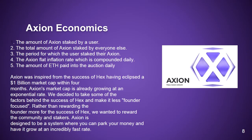Axion Economics: Axion generates interest through the idea of inflation. The Axion smart contract pays out based on 5 basic principles: 1) the amount of Axion staked by a user; 2) the total amount of Axion staked by everyone else; 3) the period for which the user staked their Axion; 4) the Axion flat inflation rate, which is compounded daily; and 5) the amount of ETH paid into the auction daily.